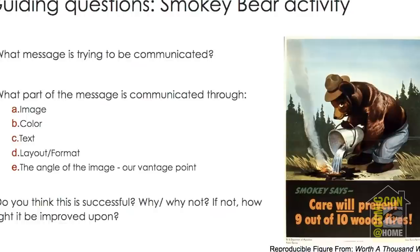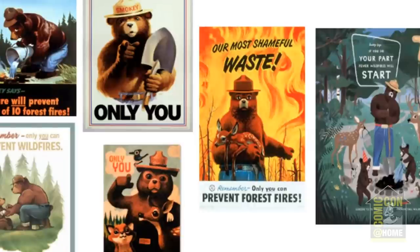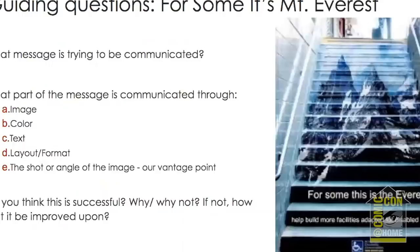With your students, you want to ask them: what message is trying to be communicated? What part of the message is being communicated through image, color, text, the layout, the format, the ink, where we're looking from our vantage point? And do you think this is successful — why or why not? Here's a whole array of Smokey the Bear over time. You see something like Smokey the park ranger who looks kind of like a bear, to Smokey at 75 — he's less buff, still kind of masculine, but less buff. He's a father now. He has all sorts of friends around him and it's a party.